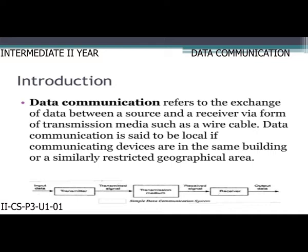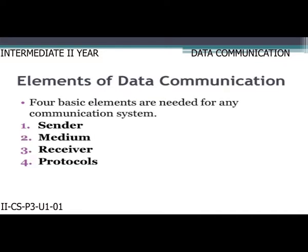Data communication is said to be local if the communicating devices are in the same building or a similarly restricted geographical area. Data communication consists of the following four elements needed for a communication system: sender, medium, receiver, and protocols.